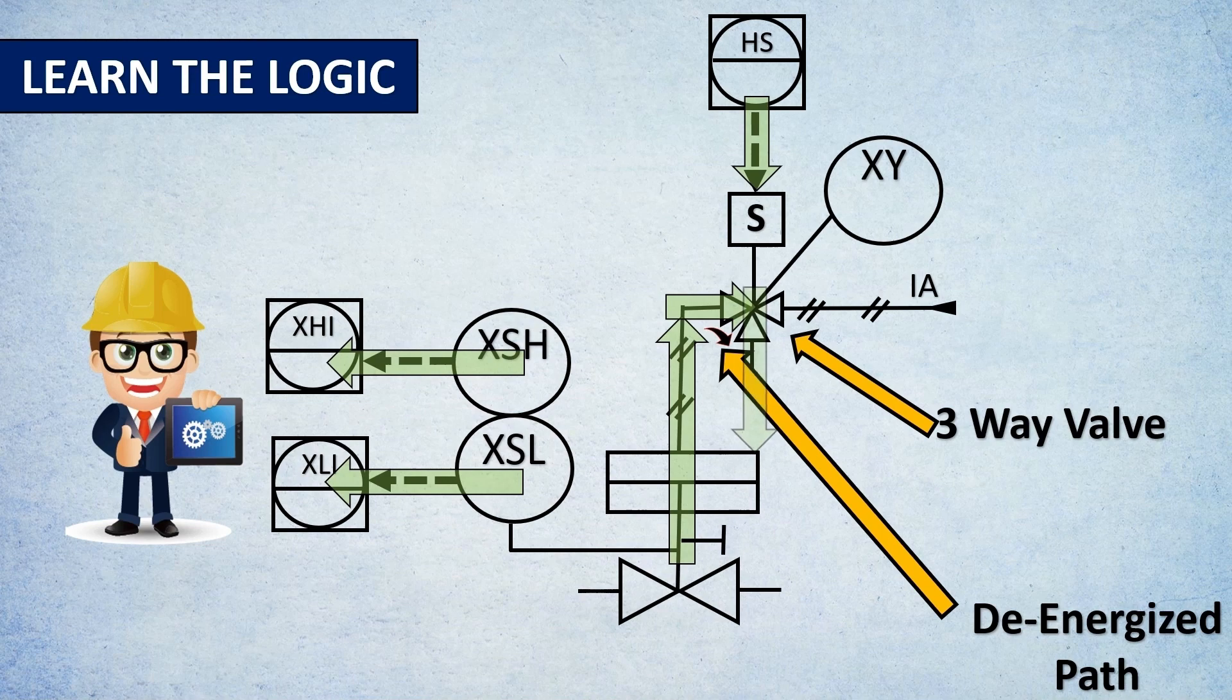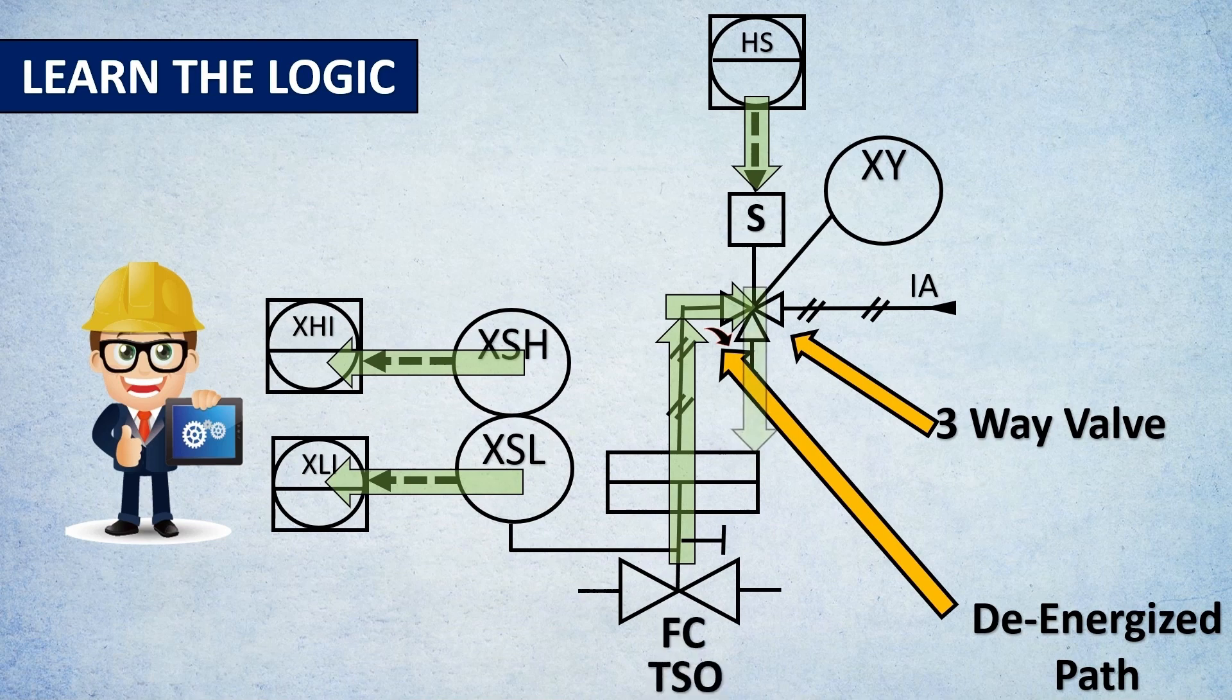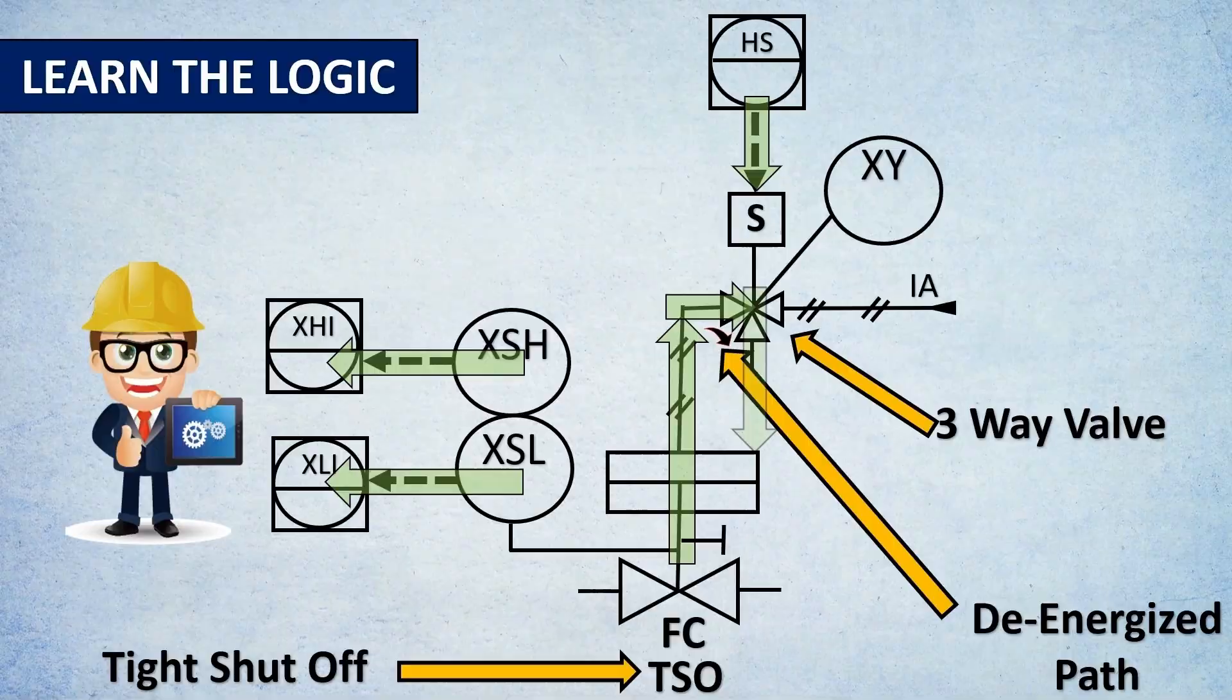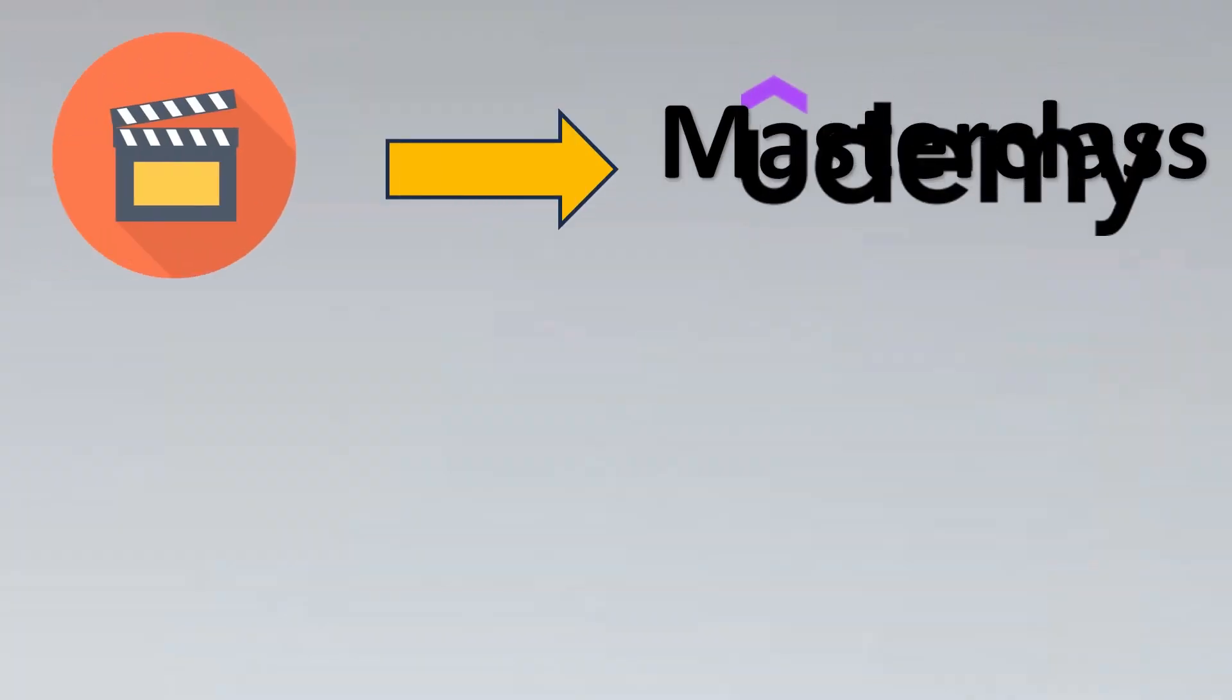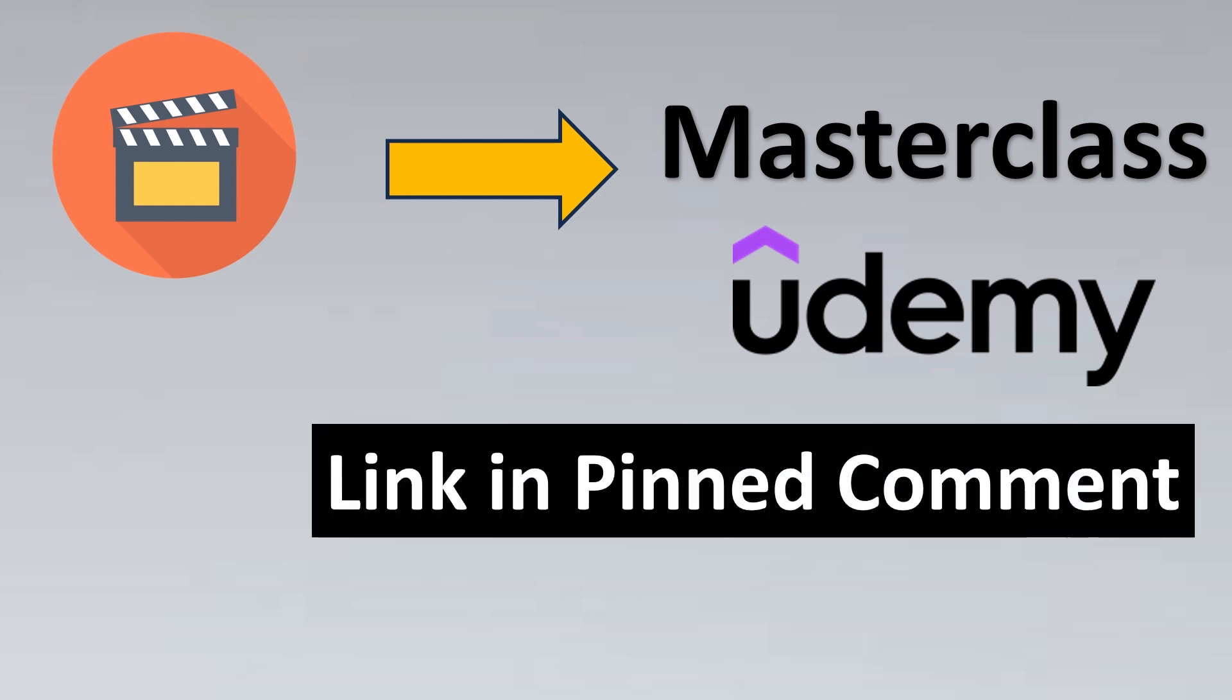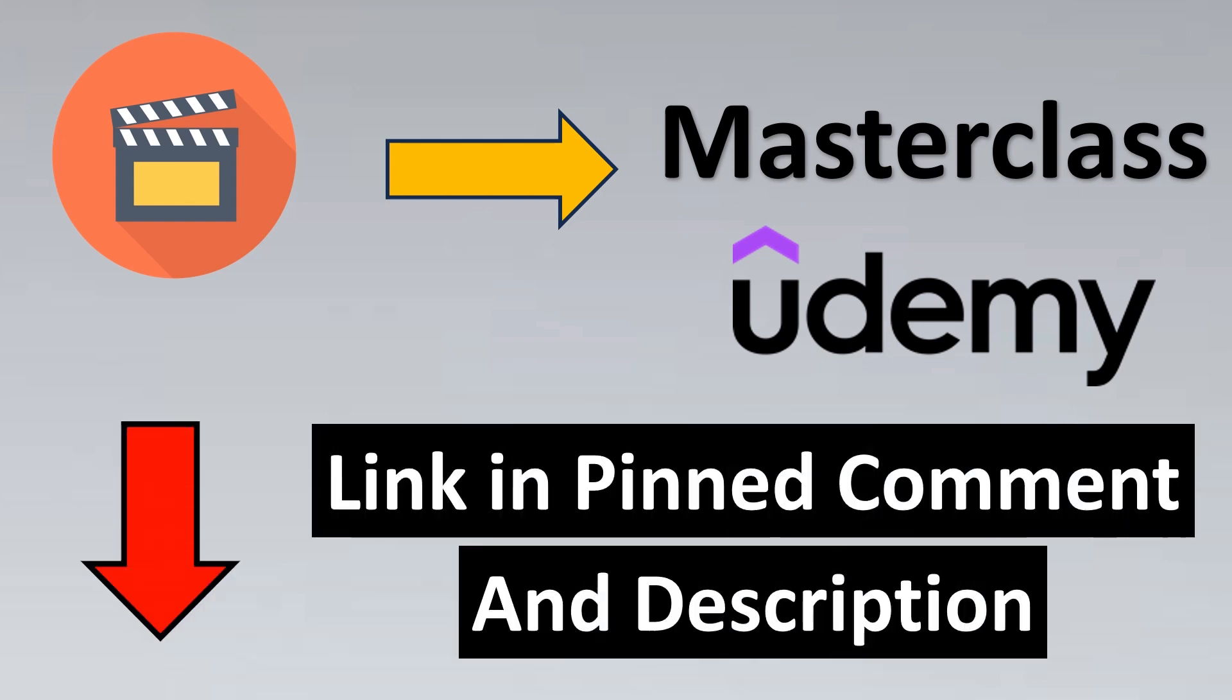Once the valve has gone back to its position, this signal is indicated to the operator at the control system. Sometimes below the valve, terms like FC and TSO are written. FC means fail close or fail open, the failure action. TSO stands for tight shutoff. This video is part of the masterclass on Udemy called 'How to Learn P&ID in a Brand New Way.' The link is in the pinned comment and description. Happy learning!